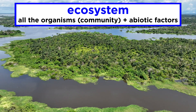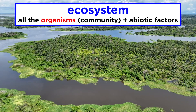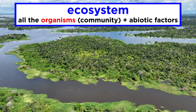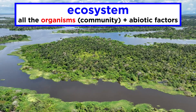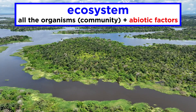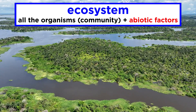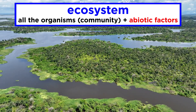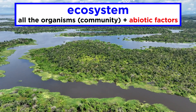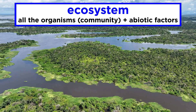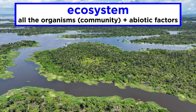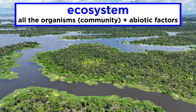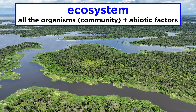An ecosystem consists of all the organisms in an area, meaning the entire community, as well as the abiotic factors that influence the community. So we are looking past organisms here towards the physical phenomena that have an impact on them.